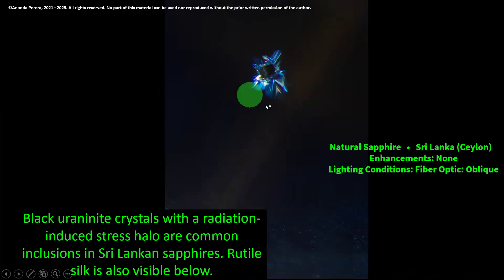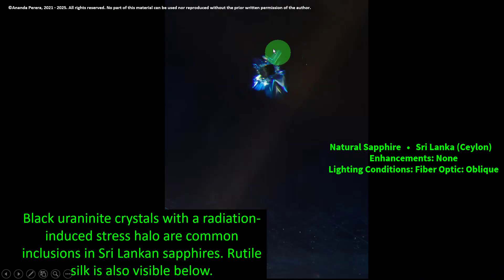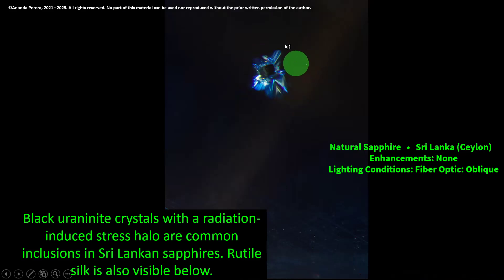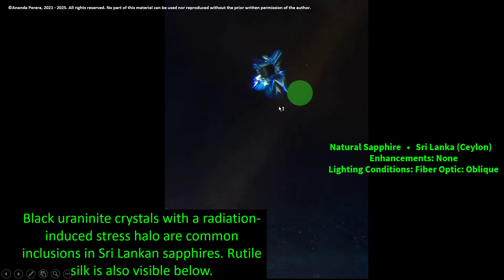The lighting condition is fiber optic oblique. These are black uraninite crystals with radiation-induced stress halos — common inclusions in Sri Lankan sapphires. Earlier we saw the zircon crystals; the uraninite crystals show radiation-induced stress halos that are common inclusions in Sri Lankan sapphires. Rutile silk is also visible below. Both rutile silks and uraninite crystals with radiation-induced stress halos are common features inside Sri Lankan sapphires.